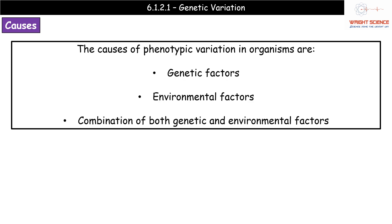When it comes to the actual causes of phenotypic variation in organisms, there are three we need to know about: genetic factors only, environmental factors only, and a combination of genetic and environmental factors together.